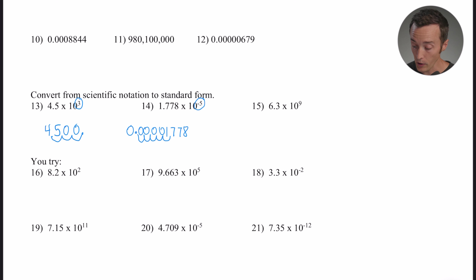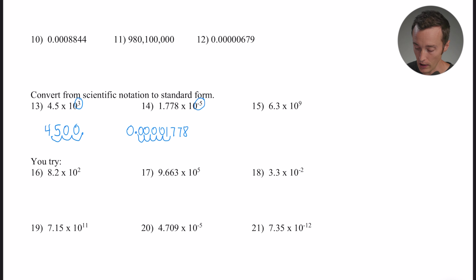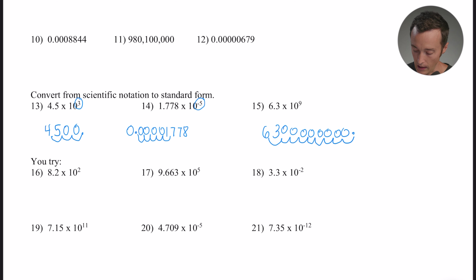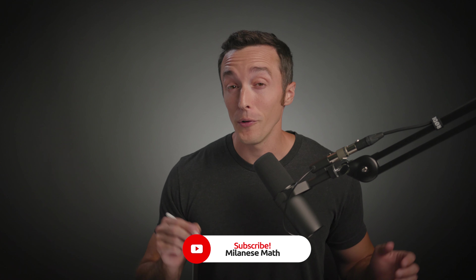One more: 6.3 times 10 to the ninth. From experience, a large positive exponent means a very big number. I've got a six and a three, and I count nine spaces to the right starting between the six and the three: one, two, three, four, five, six, seven, eight, nine. Then fill in zeros, and that's the final answer. Hopefully this video was a helpful refresher on scientific notation and standard form. Consider subscribing, and thanks for watching — catch you next time!